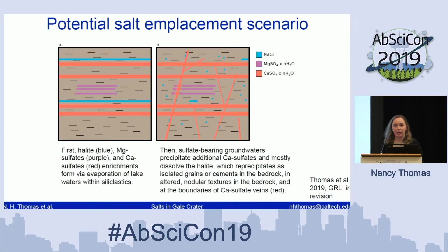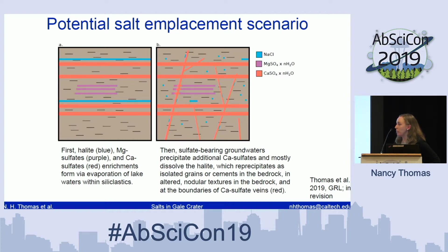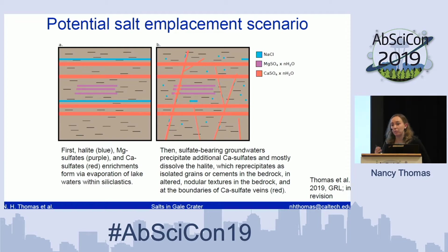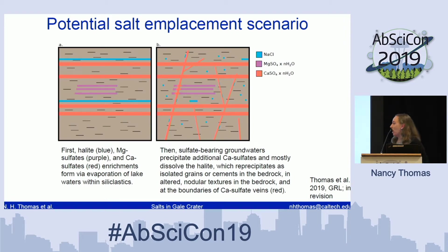Wrapping this into a potential emplacement scenario: the combined evidence for sulfate and chloride salts suggests they were first deposited via evaporation of lake waters as the Murray formation was deposited. Later, sulfate-rich groundwaters were prevalent, and there may have been multiple sulfate-rich groundwater events which mostly or completely dissolved the halite — a very mobile phase — and redeposited it as individual grains and potentially cements within the bedrock, explaining its sporadic occurrence throughout the Murray formation.